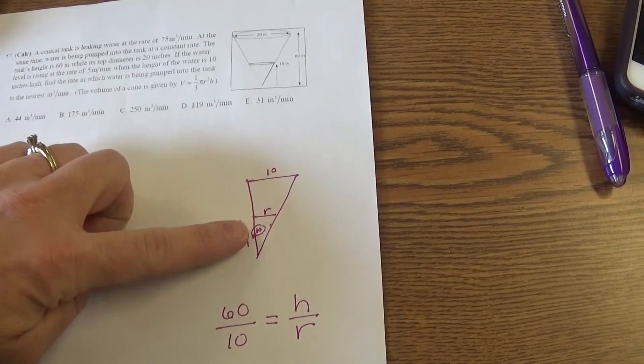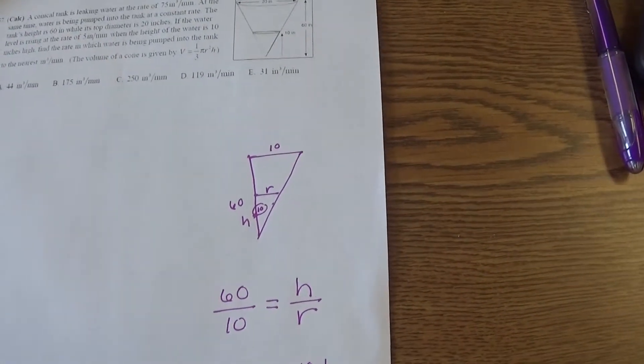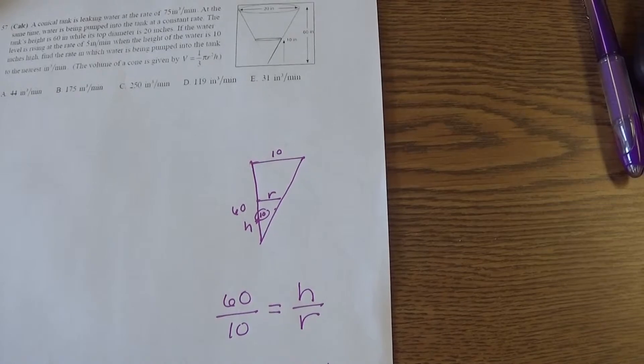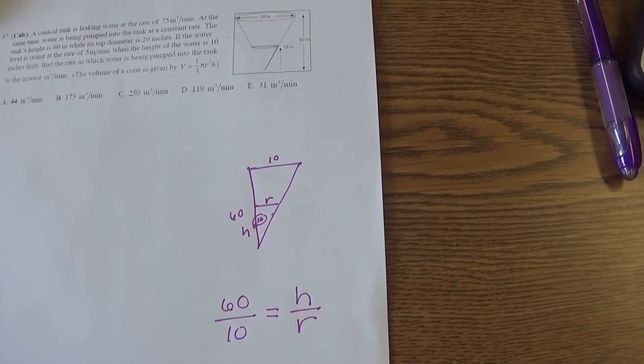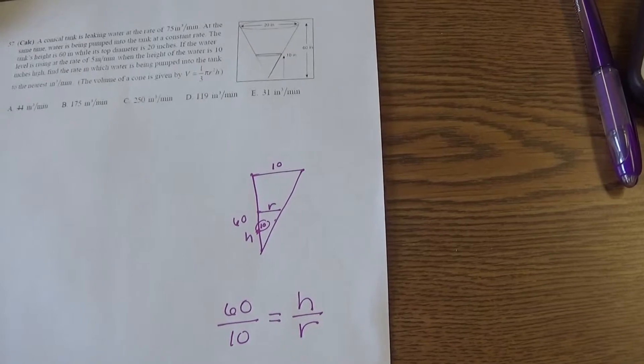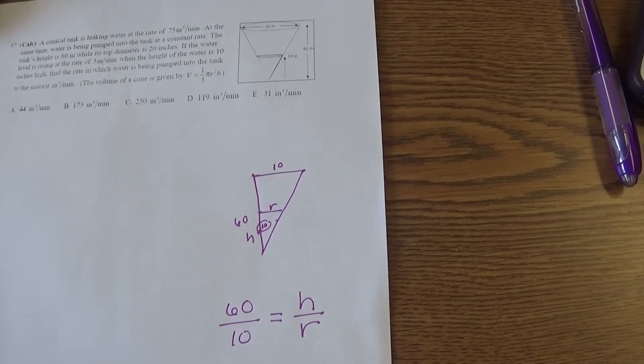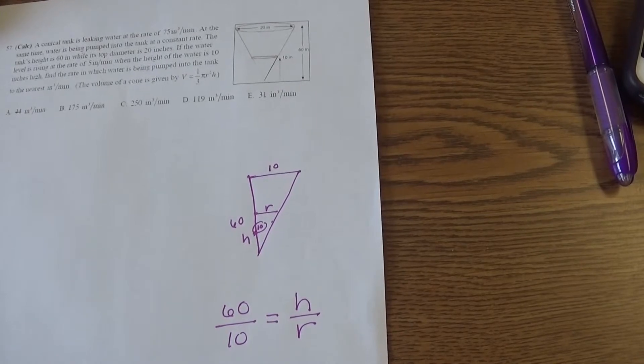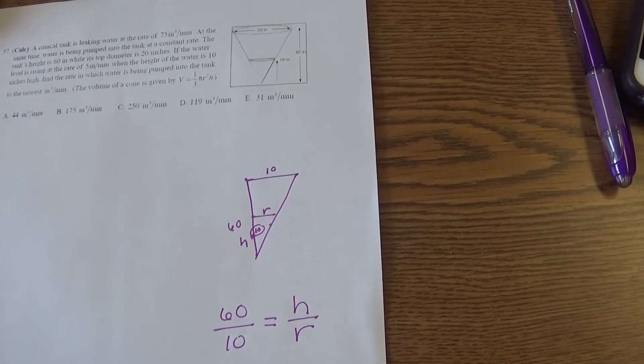We know that the radius of the cone is 10, and then the radius down a little further we're not sure about, so we just put that as r. The entire height of the whole cone is 60. The height at this moment is 10 but it is changing, so I just put h for that right here.